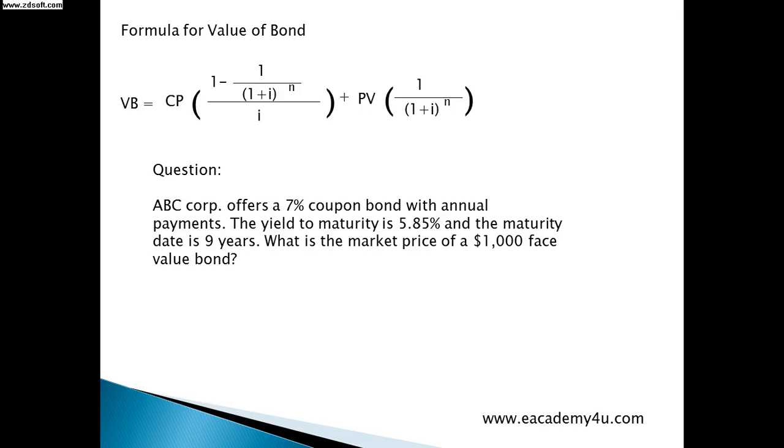ABC Corporation offers a 7% coupon bond with annual payments. The yield to maturity is 5.85% and the maturity date is 9 years. What is the market price of a $1000 face value bond? So we solve this one.